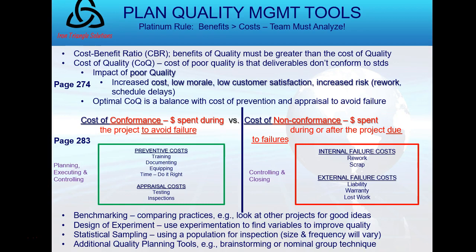We already discussed the cost of quality on page 282, which we had also covered around page 274 of the PMBOK Guide. Cost of conformance is how much money you spend to avoid failure; cost of non-conformance is how much you spend due to failures. In that section there are probably eight possible test questions for the certification exam — keep that in mind.